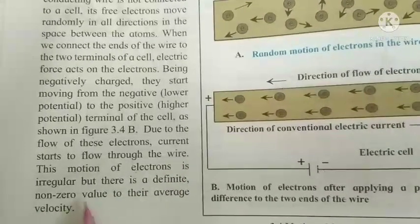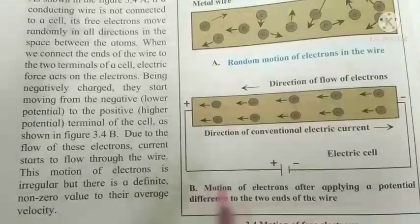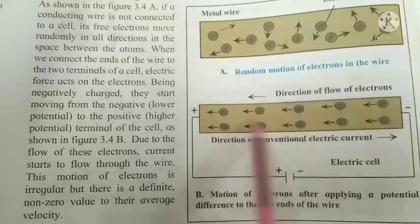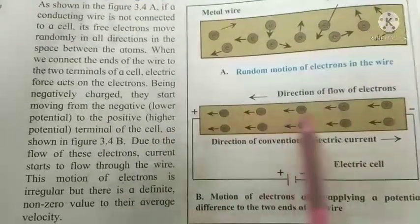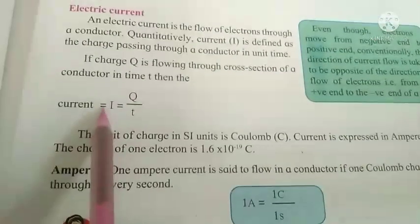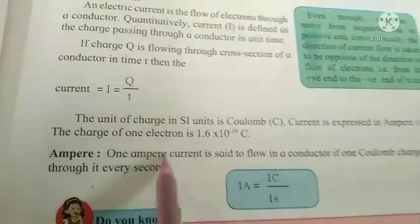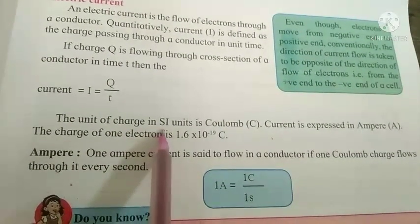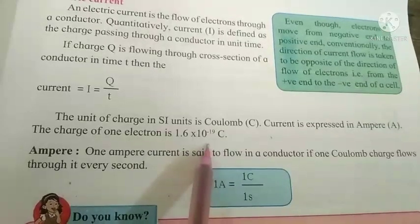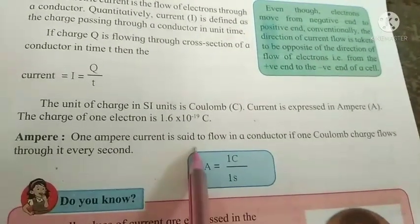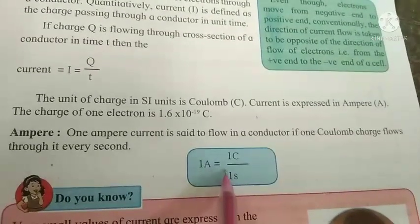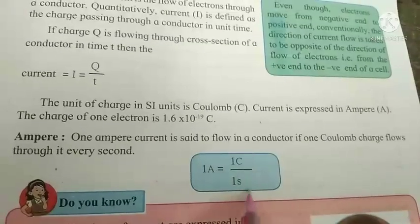The motion of electrons is irregular but has a non-zero average velocity after applying the potential difference between the two ends of the wire. Electric current I is equal to charge Q upon time t. The SI unit of charge is the coulomb and current is expressed in amperes. One charge of one electron is equal to 1.6 × 10⁻¹⁹ coulombs. One ampere is the current when one coulomb of charge flows through a conductor every second: 1A = 1C/1s.